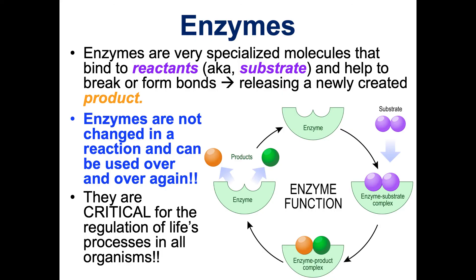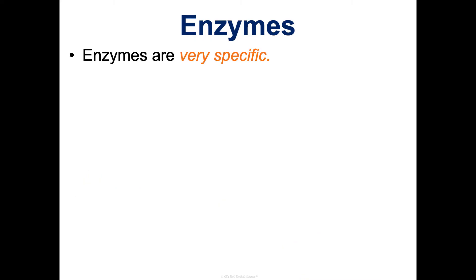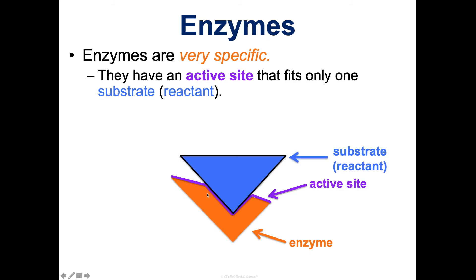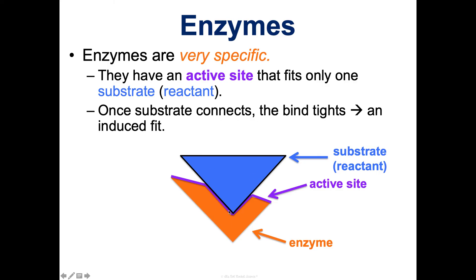Enzymes are incredibly specific. Each enzyme has something called an active site, and it only fits one substrate or reactant. Once the substrate connects, the bind tightens and it causes an induced fit. When I was growing up we called it the lock-and-key model, to show that enzymes are really specific — like a key and a lock that only fit in certain places. But really, it's more like a baseball and a catcher's mitt: when someone throws a baseball and you catch it with a catcher's mitt, your hand grips down on the ball and that bind tightens. That's called an induced fit, and that's what we see with an enzyme.